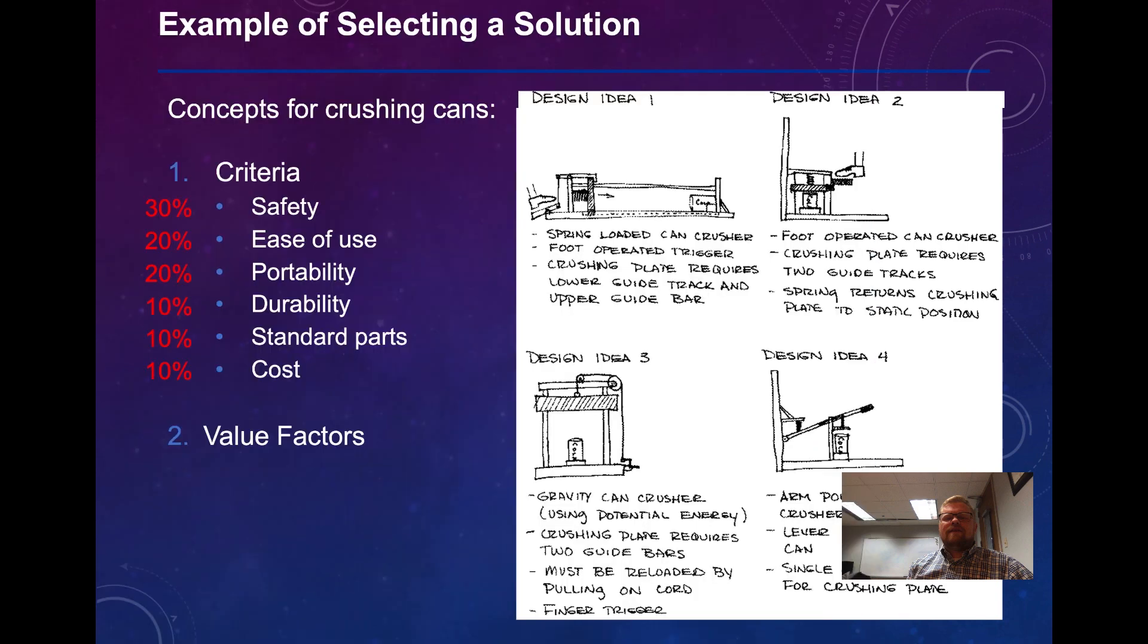So let's add some weights. Let's say safety is actually 30%. It is the most important thing. Ease of use and portability are also highly important. And the others come in at 10% each. And so what I'm going to do is I'm going to use a weighted decision-making matrix.